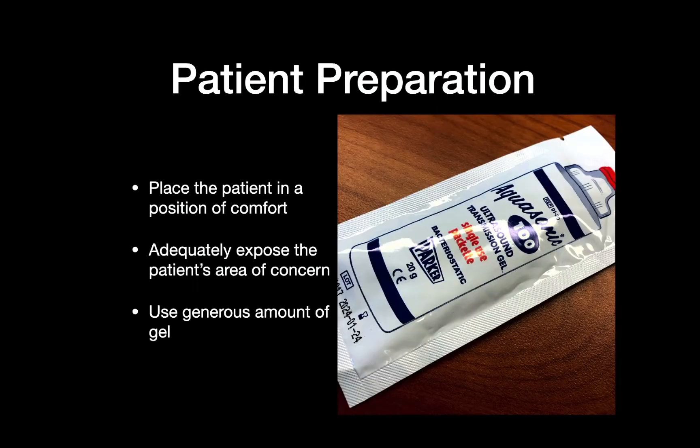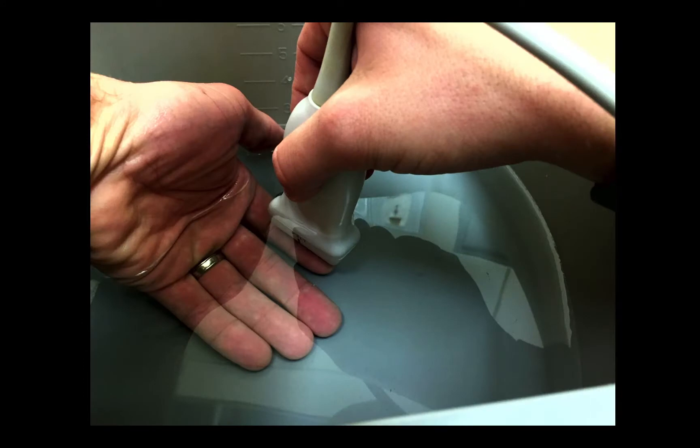We want to place the patient in a position of comfort and adequately expose the area of concern. In this situation, we really want to use a generous amount of gel. These patients are hurting, and the more gel you use, the more you're able to glide the probe across the skin surface without placing a lot of pressure on it. If the location is amenable, just use a water bath — submerge the area of concern in water and glide the transducer across the surface of the water to assess the skin and soft tissue.